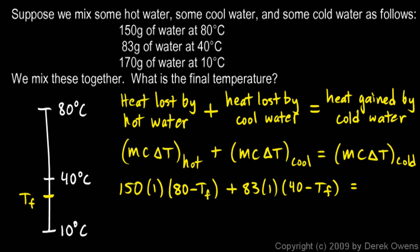That equals mc delta t for the cold water. We have 170 grams of cold water. The specific heat for the cold water is 1. The delta t for the cold water - it starts at 10 and warms up to Tf - so delta t is Tf minus 10.